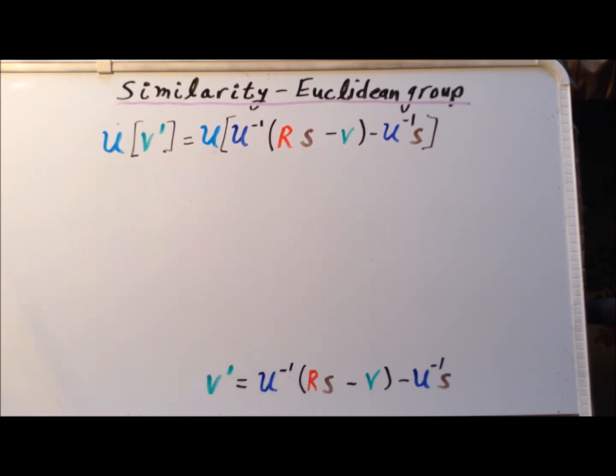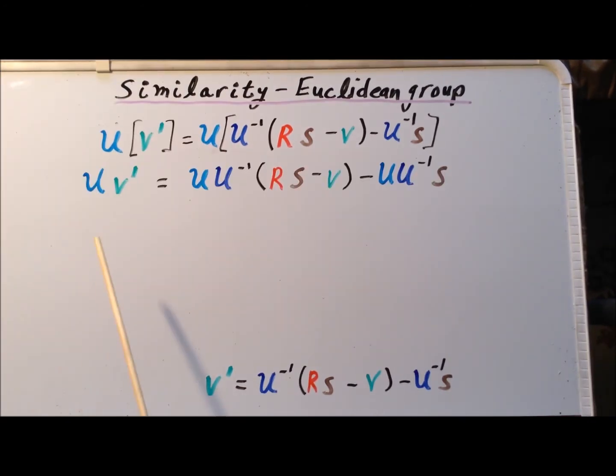And here we show the application of the U operation to each side. And now we will simplify. The left hand side is straightforward. For the right hand side, we use the distributive law to distribute the U rotation over the term inside the brackets. We get U inverse of U times R S minus V minus U inverse of U of S.